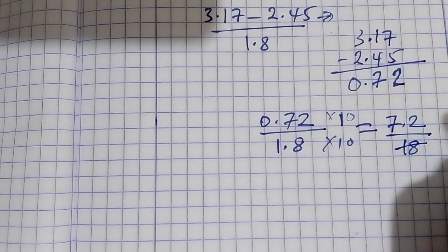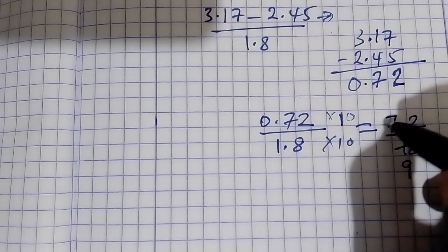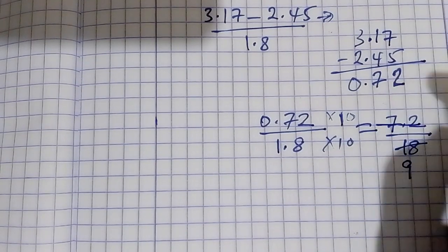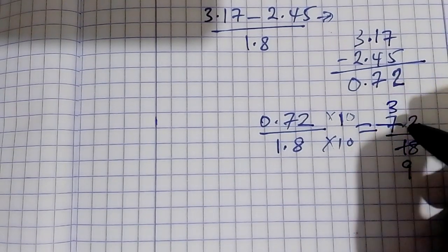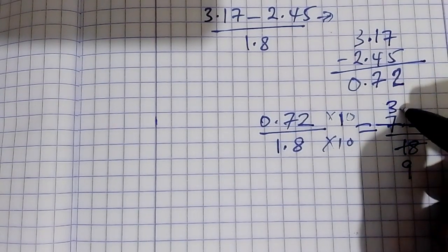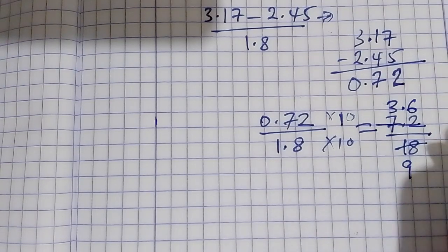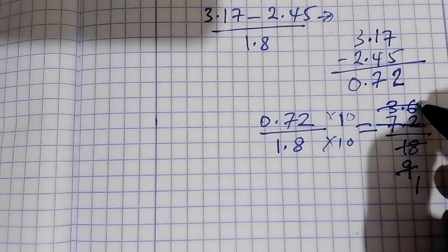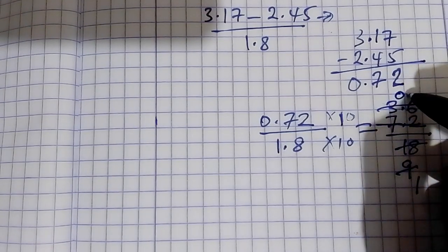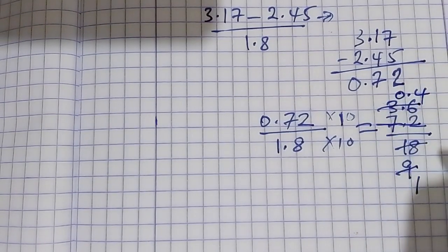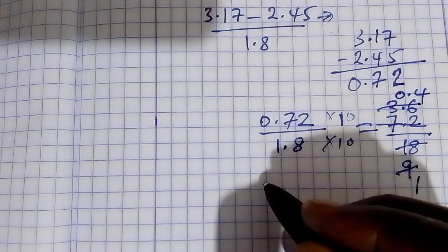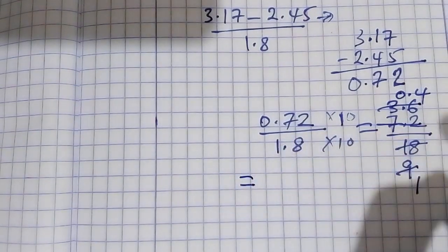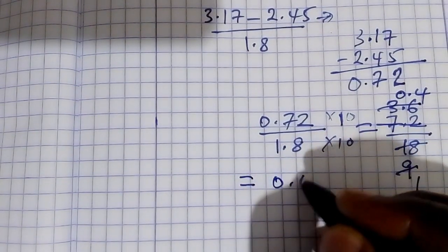Dividing 7.2 by 18, we get 0.4. So our answer is going to be 0.4.